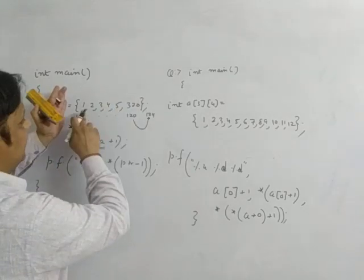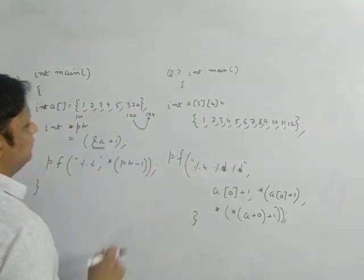So there is a jump of size of 1, 2, 3, 4, 5, 6 element. So size of 24, jump.